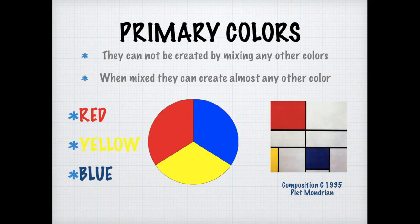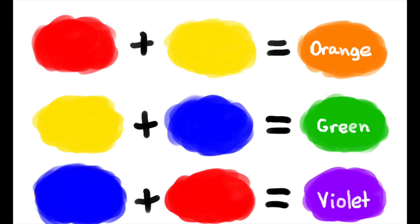Let's look at the primary colors. They can't be created by mixing any other colors. You need to have these colors from the beginning, but you can mix the primary colors together to make secondary colors and a lot of other colors. The primary colors are red, yellow, and blue. You can mix red and yellow together and you'll get orange. If you mix yellow and blue together, you'll get green. And if you mix red and blue together, it'll make purple.